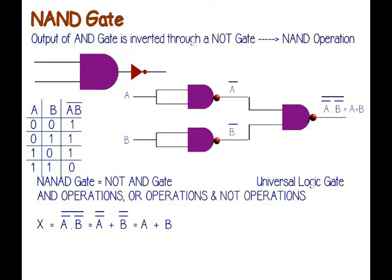Now we have proved that all three basic binary operations can be realized by using only NAND gates. Hence, any other simple or complex binary operation must also be realizable using only NAND gates. Hence, it is justified to call NAND gates universal gates.